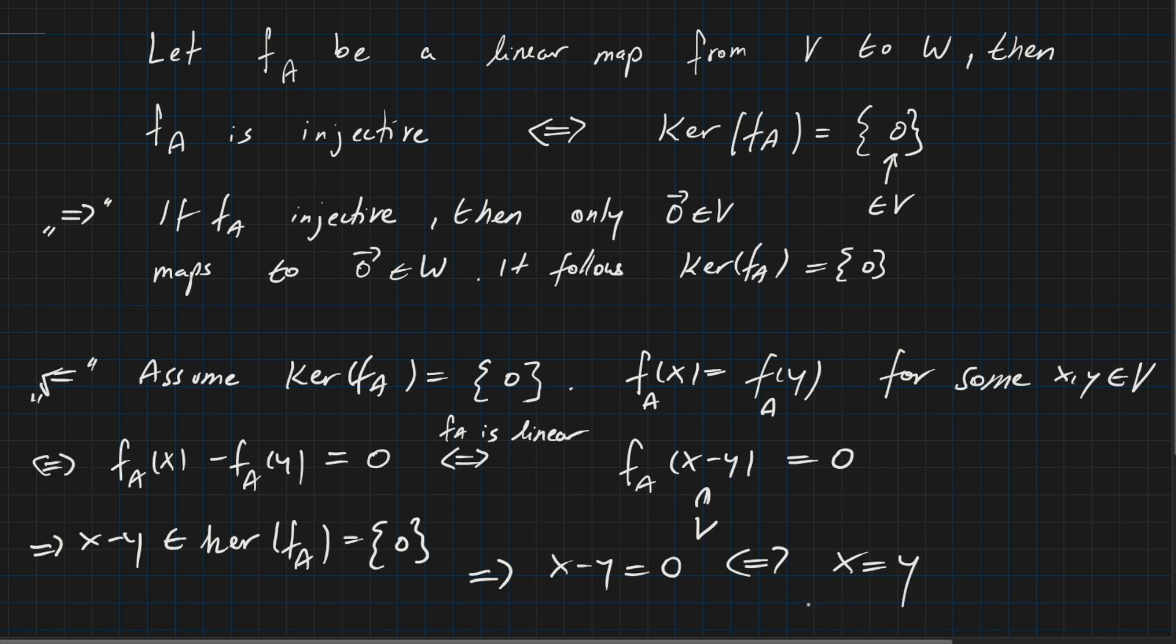So we concluded, if FA(x) = FA(y) for some elements of the vector space, it must be that x = y. And this shows FA is injective. And this concludes our proof.